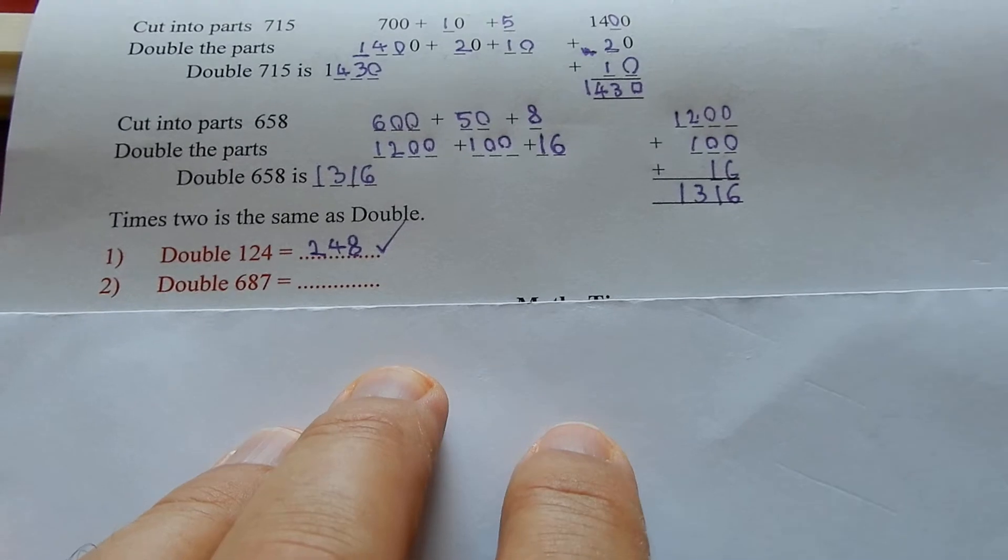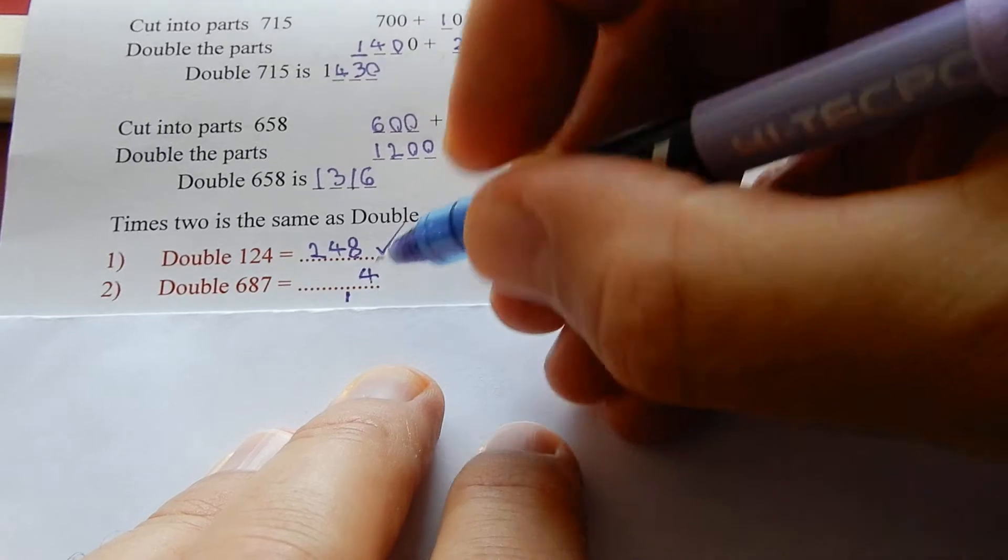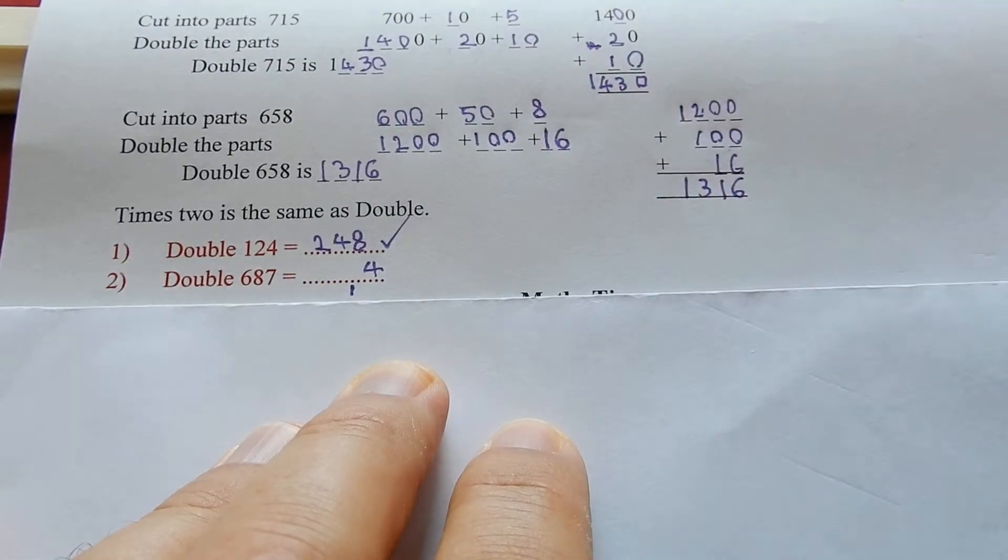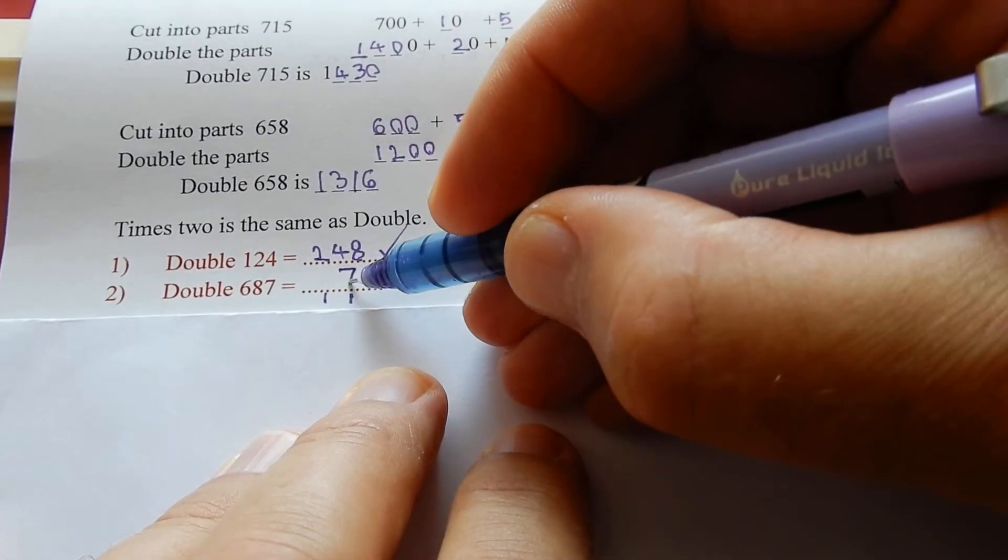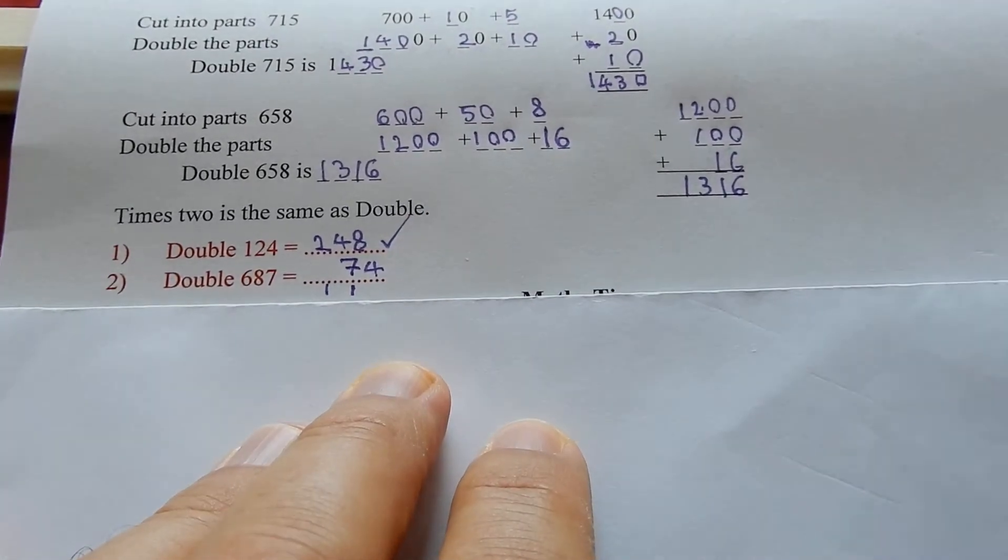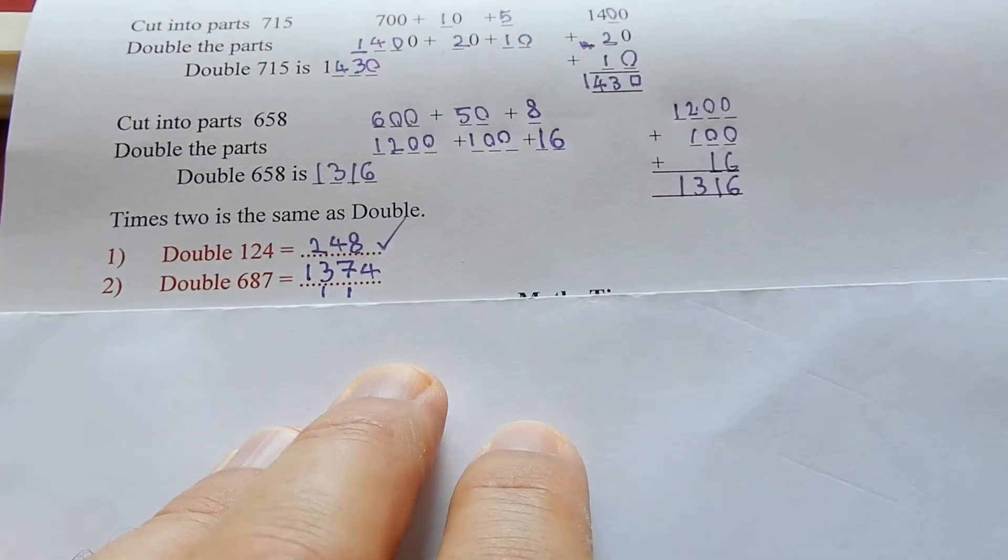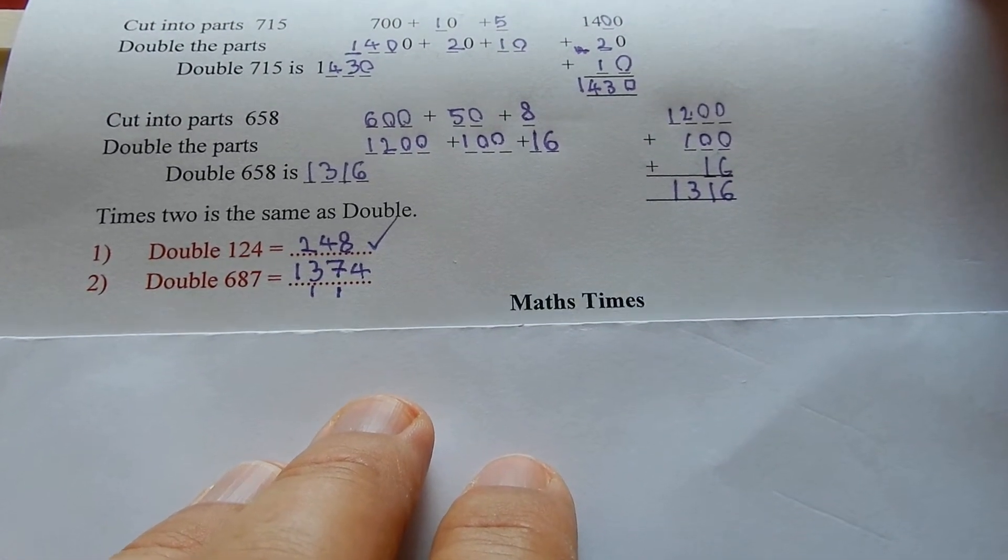Double 687. Double 7 is 14, that's to tell me I've got to add on the 10. Double 8 is 16, 16 plus 1 is 17. Double 6 is 12, 12 plus 1 is 13. 1374 is double 687.